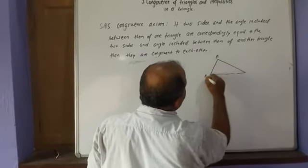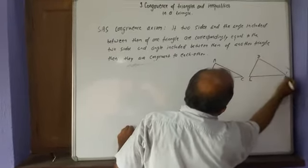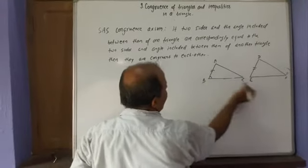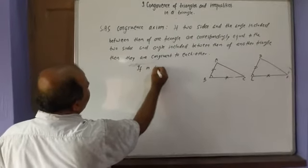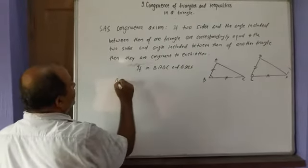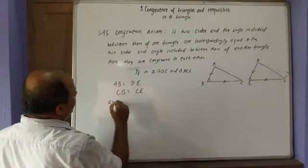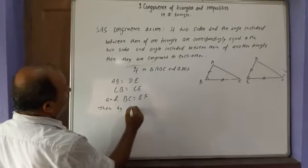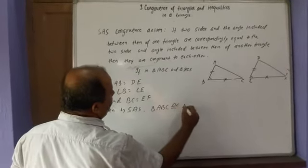For example, in triangle ABC and triangle DEF: if side AB equals side DE, angle B equals angle E, and BC equals EF, then by SAS, triangle ABC is congruent to triangle DEF.